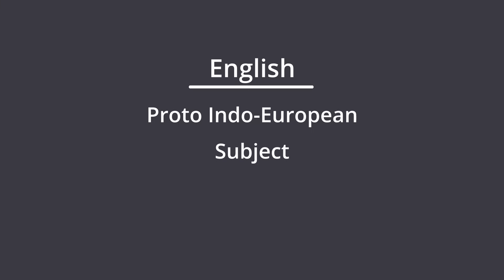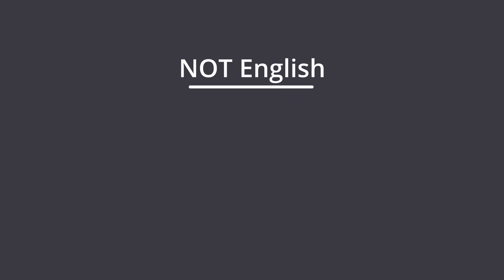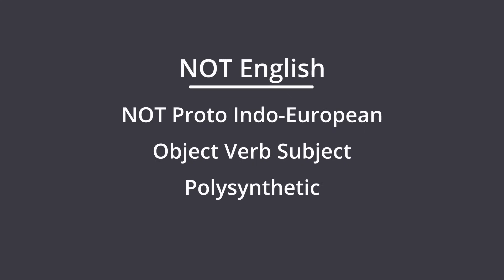It is SVO — subject, verb, object — sentence structure. And finally, it's isolating, kind of. To find which language is the most different from English, we'll be looking at what language has the most different characteristic from these, or the opposite.